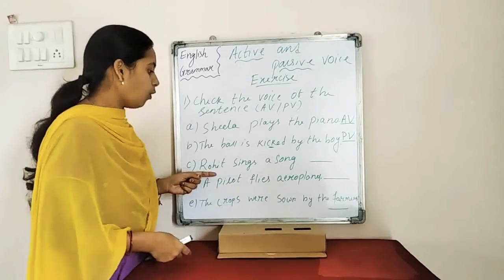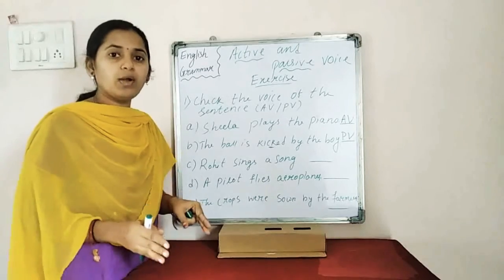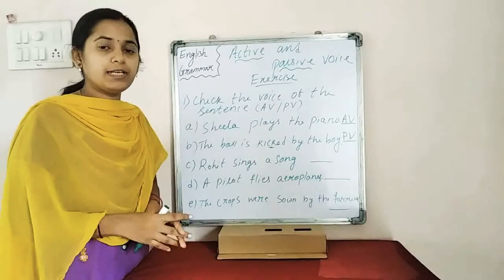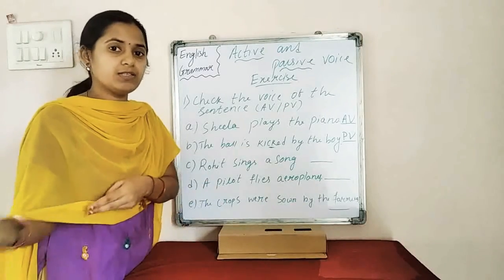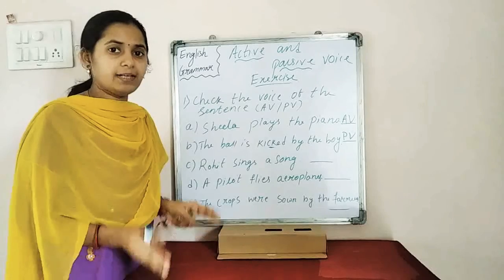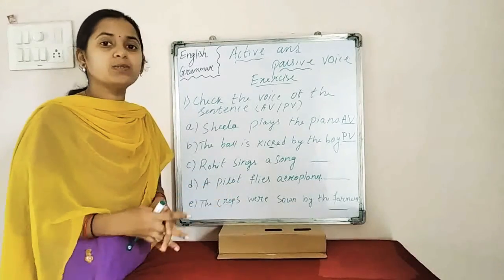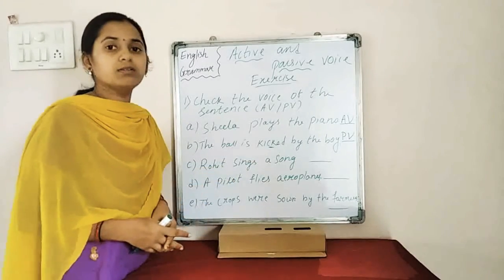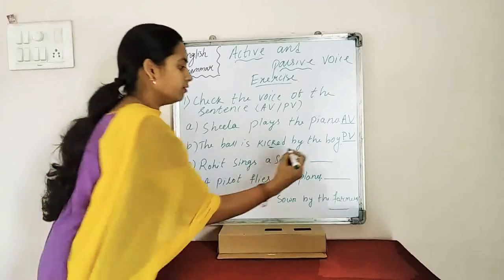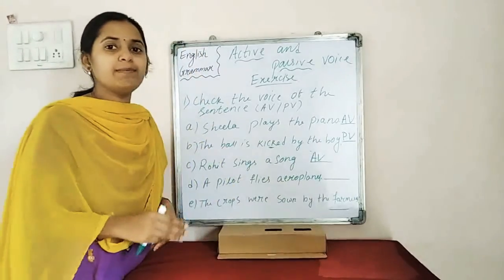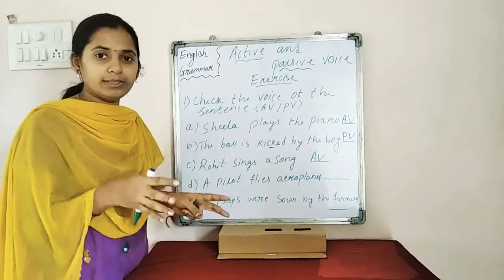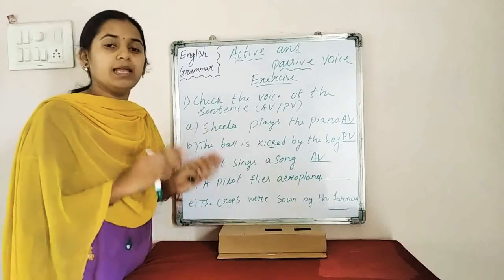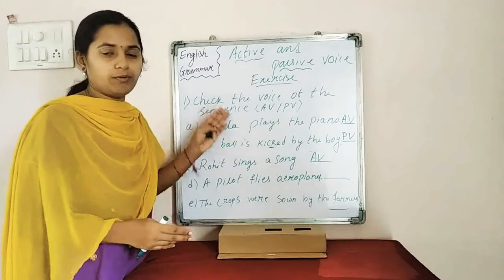The third sentence is: Rohit sings a song. Here you can see that directly the subject has done something. Rohit is the subject, and 'sings' is the verb. So this is in the active voice — A-V. Always remember: before finding out whether a sentence is in active or passive voice, first find out the verb and the subject, then move to the question.